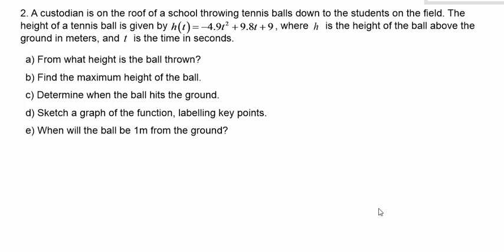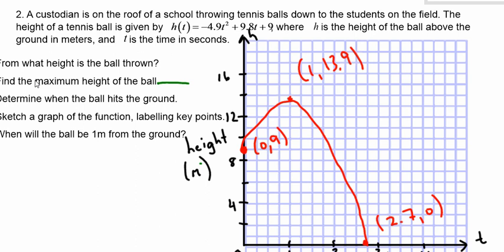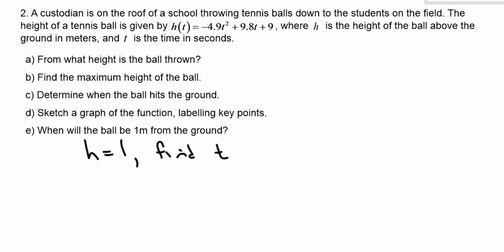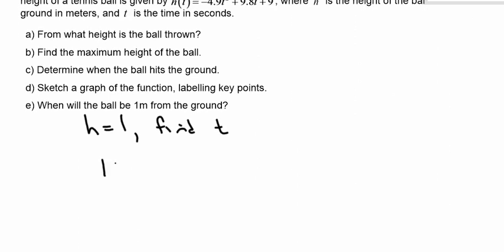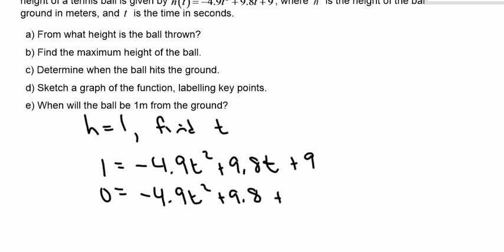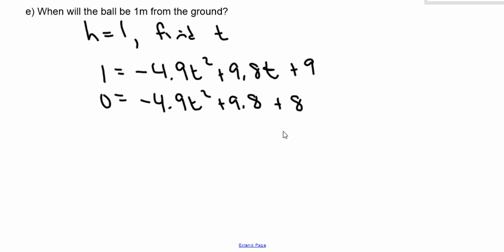And then finally, when will the ball be 1 meter from the ground? So it's telling me that if the height equals 1, find time. I'm looking for roughly this point in time. So I know that my answer should be pretty darn close to 2.7. So what I need to do is take my equation and sub 1 in for the height, and then solve for t. I'm going to make sure that it's equal to 0, because otherwise I can't use the quadratic equation.